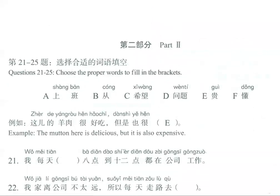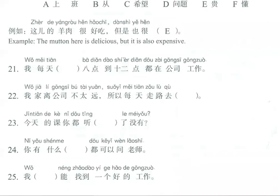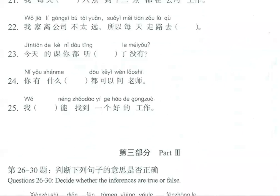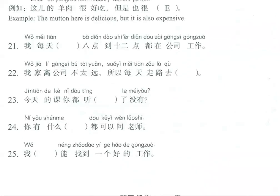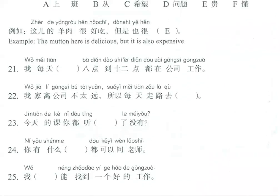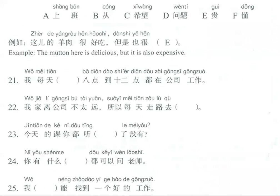This is HSK 2, lesson number 9, and we're going to correct page number 83, first questions number 21 to 25. We have to choose the proper word to fill each blank.